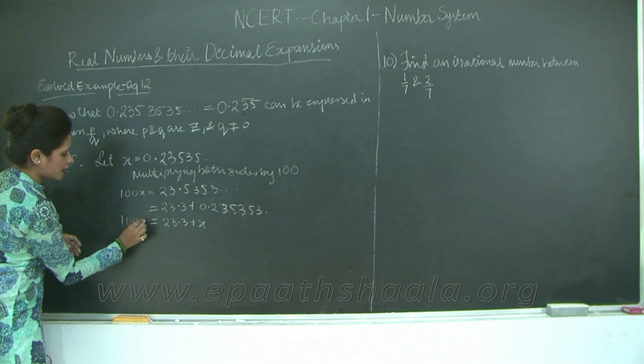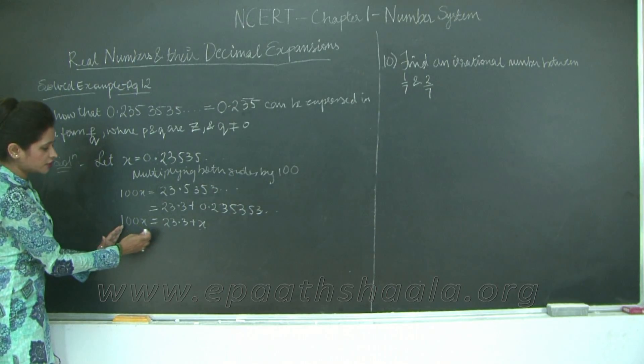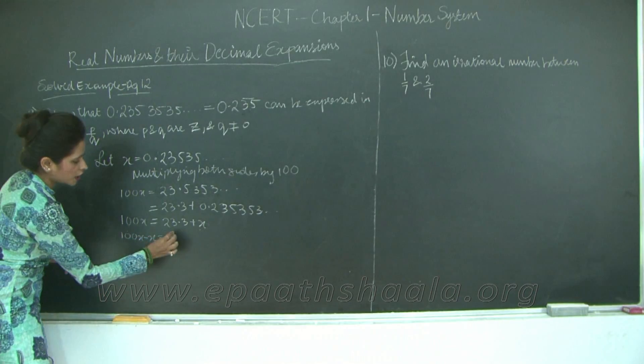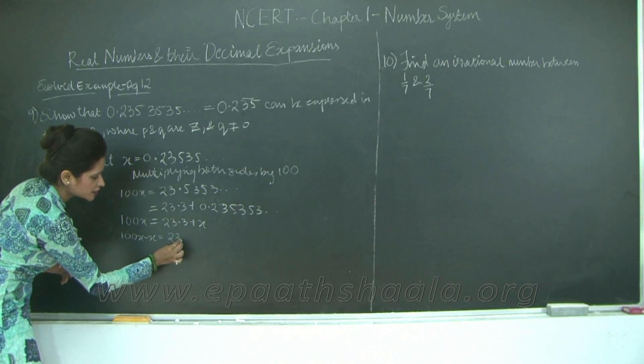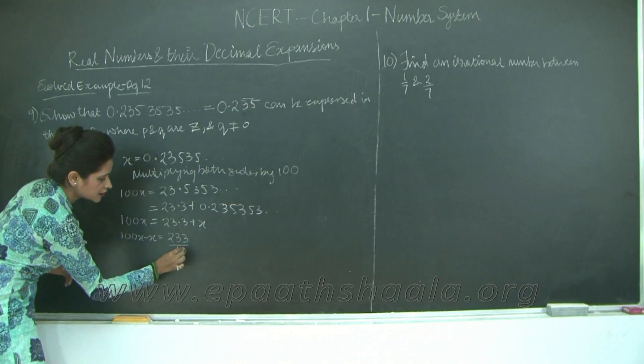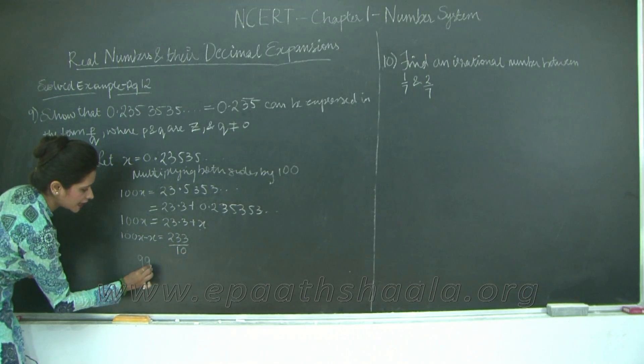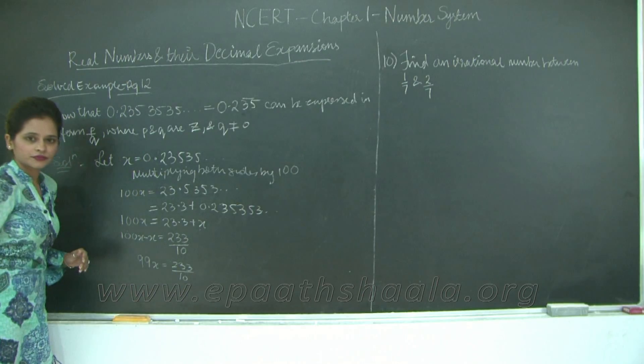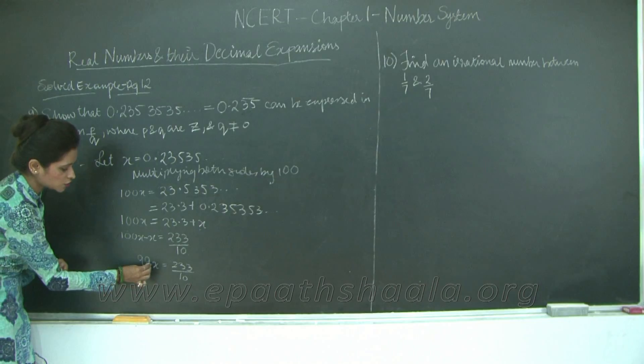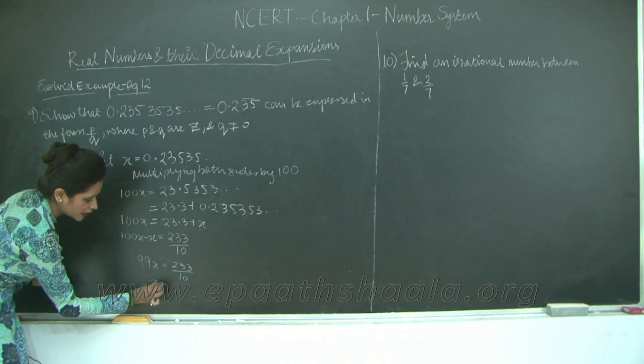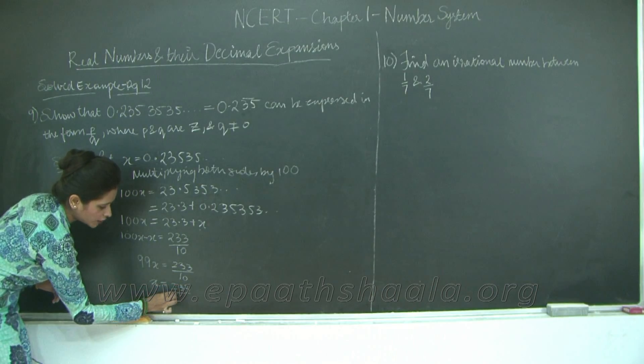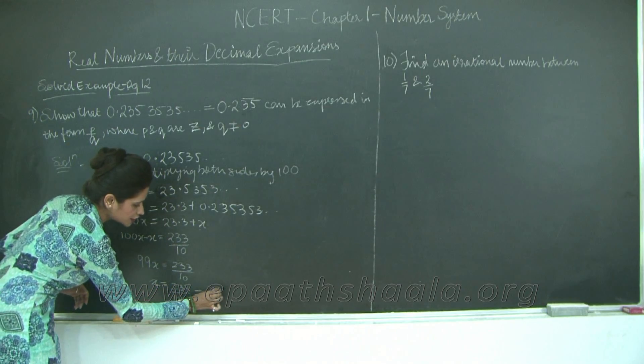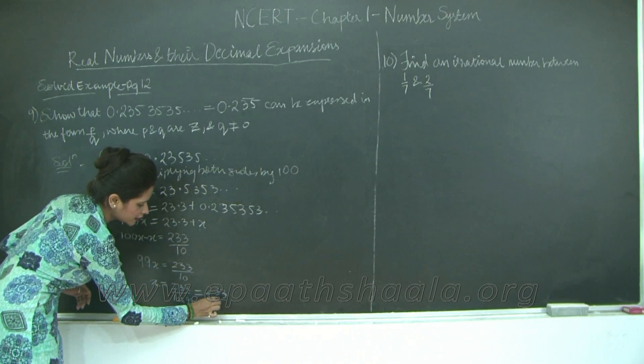Now I am going to take my x on the left hand side because I have 100x here. Similar terms on one side. I will say 100x minus x equals 23.3, which is 233 upon 10. So this will be 99x equals 233 upon 10. x is here, so 99 will come here and divide. What does this number become?